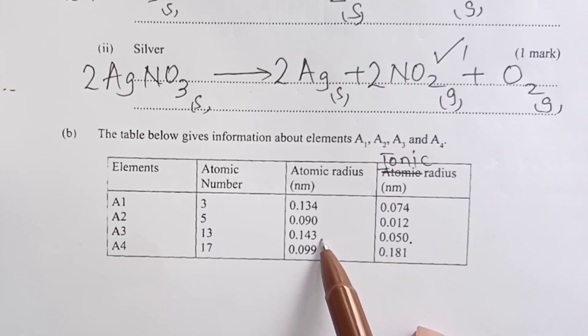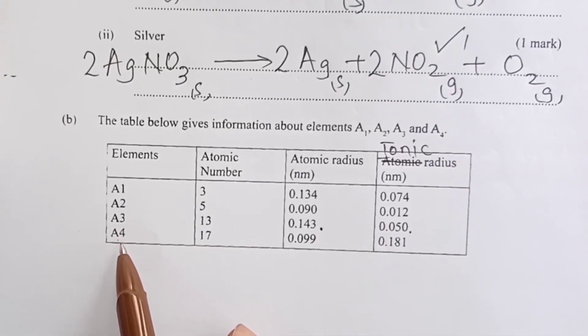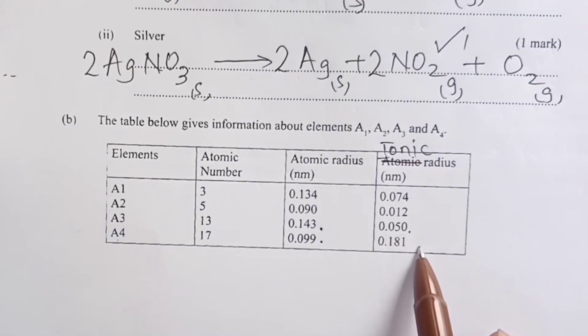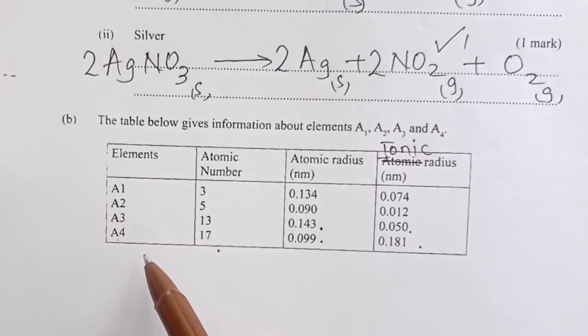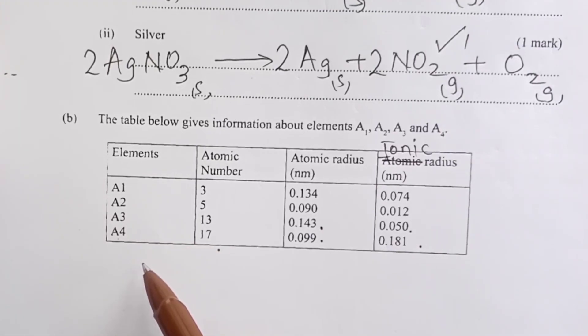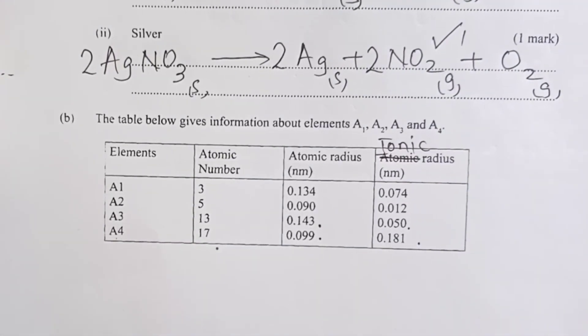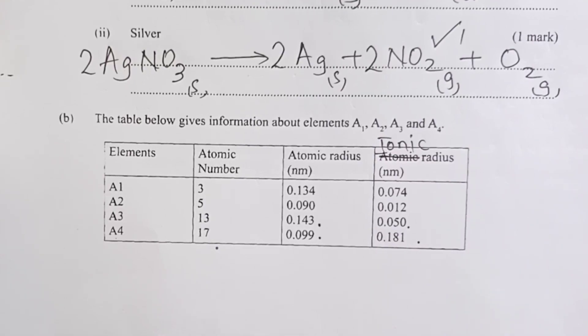Most probably these are metallic elements that lose electrons to be stable. But looking at A4, the atomic radius is actually less than the ionic radius, so A4 is obviously a non-metal. We've been given the atomic numbers here, so we can even tell what these elements are.